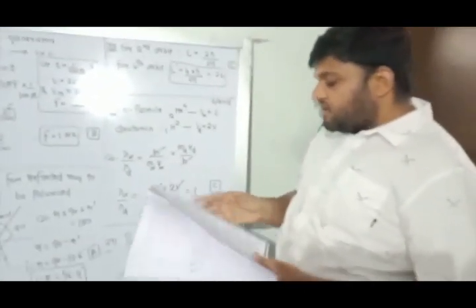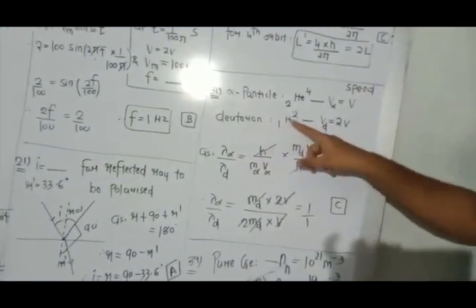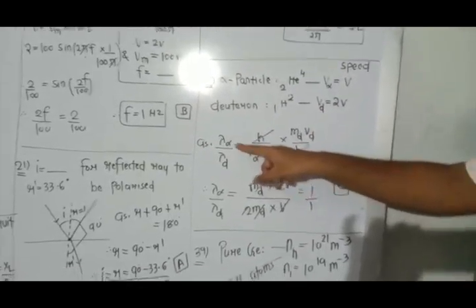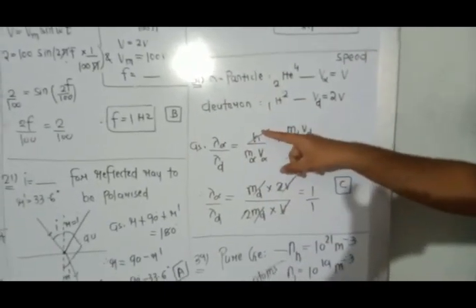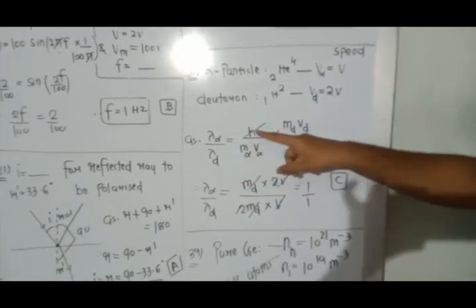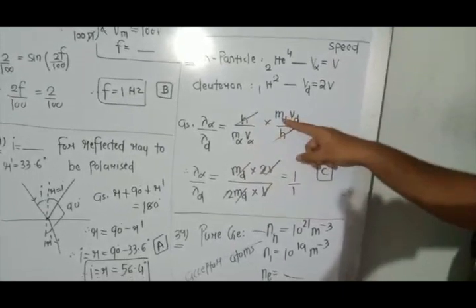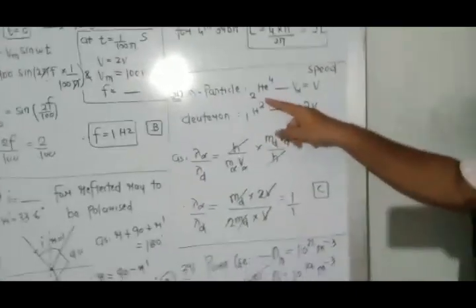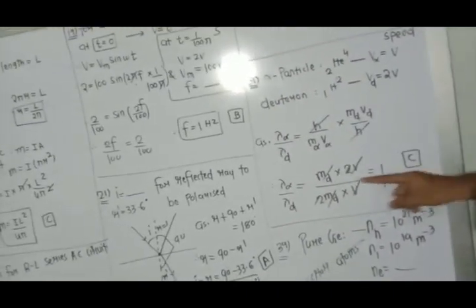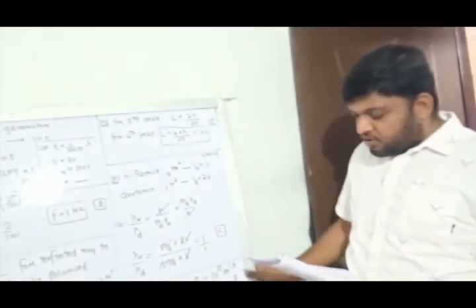Question number 31. An alpha particle (He-4) moves with velocity v and a deuterone moves with velocity 2v. Find the ratio of their de Broglie wavelengths. λ = h/(mv), so λ_alpha/λ_deuterone = (m_d × 2v)/(m_alpha × v). Since m_alpha = 2·m_d, this gives (m_d × 2v)/(2m_d × v) = 1, so the ratio is 1:1. Wait — simplifying: 2m_d·v cancels to give ratio 1:2. Option C.